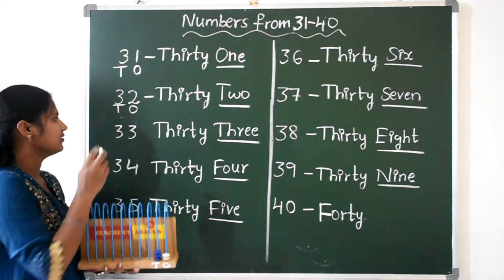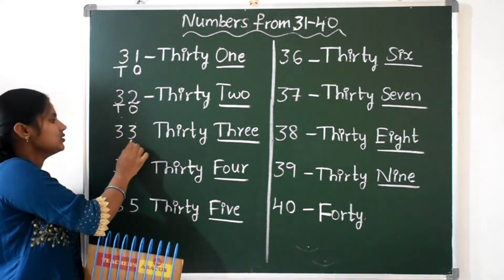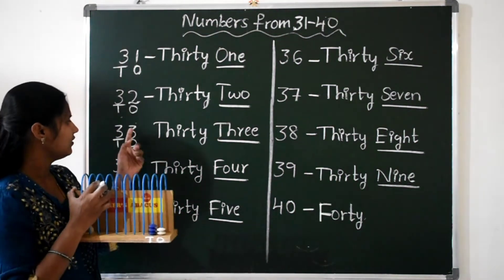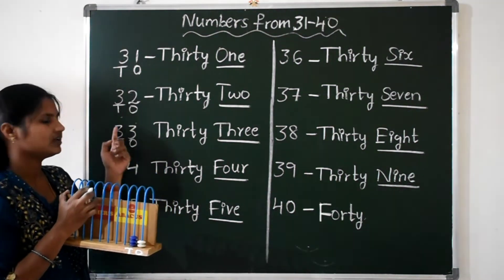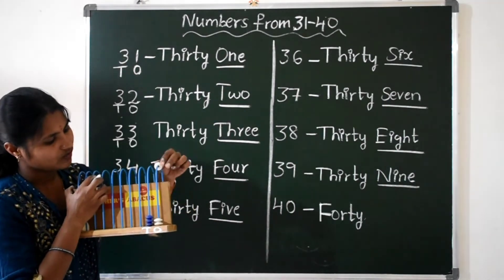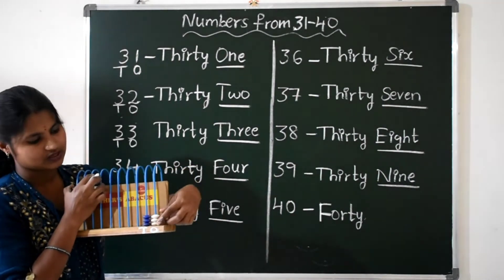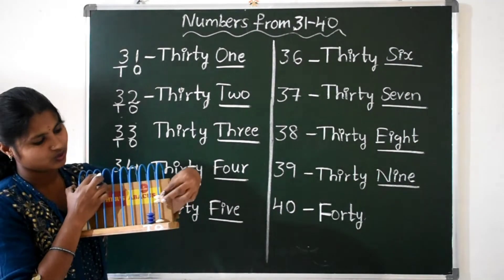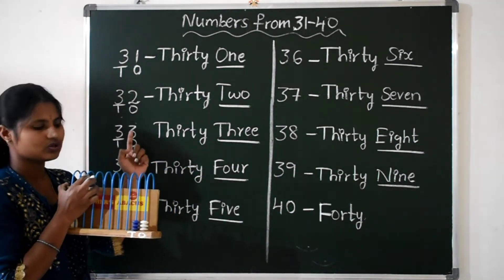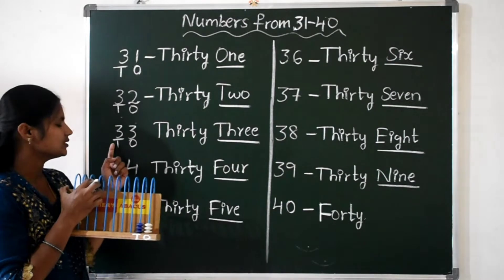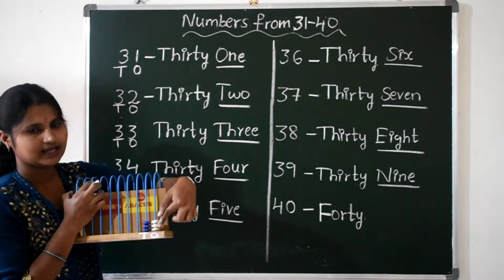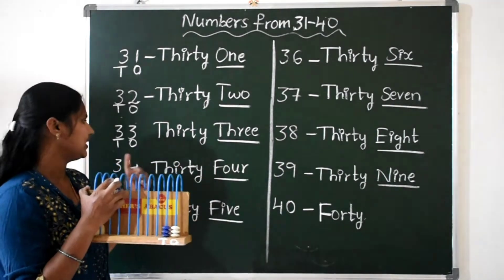Next, 33. Ones place: 3 ones. Tens place: 3 tens. So add 1 more bead in ones place. Count: 1, 2, 3. In ones place we have 3 beads, and tens place also 3 beads. So 3 and 3 makes 33.